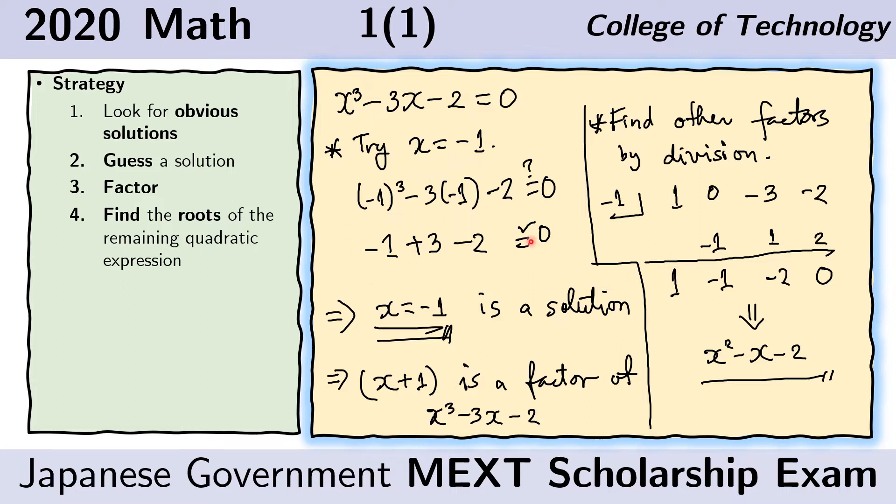That's what I do here. And indeed, we see that on this side, we get 0. On the other side, it's also 0. Therefore, this is a solution. Because x equals negative 1 is a solution, that means that x plus 1 is a factor.